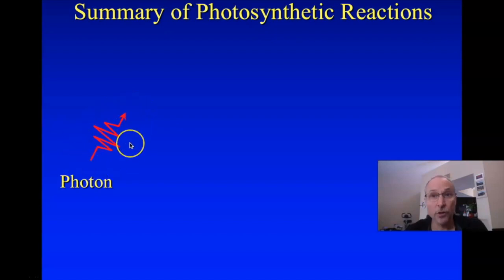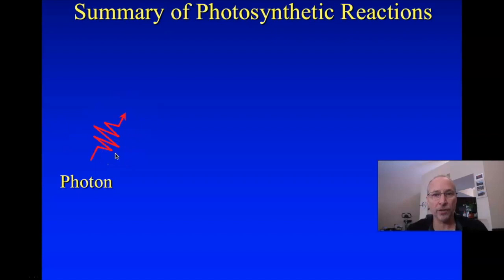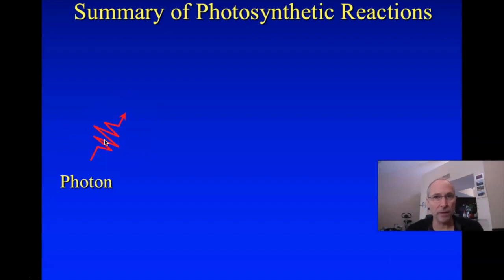So here we have a photon, the energy of which you now know how to calculate. We're going to express it as this sort of particle that's got this wave phenomenon. Now the question is, what is it that plants do with that photon? The first law of thermodynamics says that energy can't be created or destroyed, which means that whatever we do with a photon, we have to take that energy and do something with it.